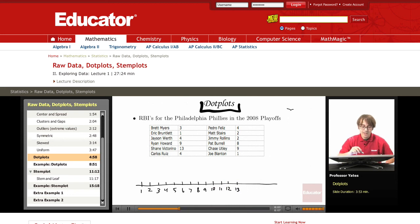And what we do here is at each value, the first person, Brett Myers, had three RBIs in the playoffs. So we make a dot here for Brett Myers. The next one, Eric Bruntlett, had one. Jason Wirth had four. Ryan Howard, nine. Shane Victorino, 13. Carlos Ruiz, four. And now that we have four, we stack them. So there's two dots there representing people who had four. Pedro Feliz is another, so we put another dot there for him.